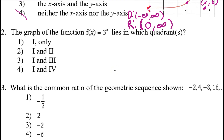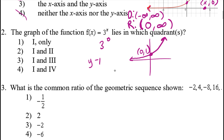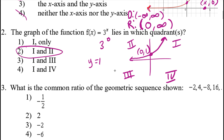Number 2: The graph of the function 3 to the x-power lies in which quadrants? This is just another exponential growth function with a y-intercept of 1, because 3 to the 0 power is still 1. Remember, the quadrants are labeled counterclockwise: 1, 2, 3, and 4. This function is contained only in quadrants 1 and 2 because it never dips below the x-axis.